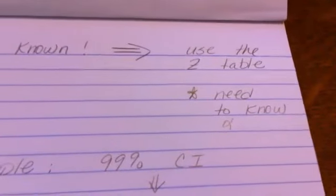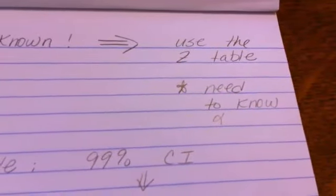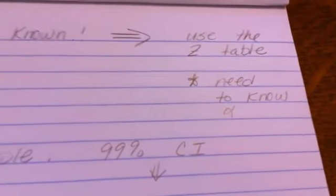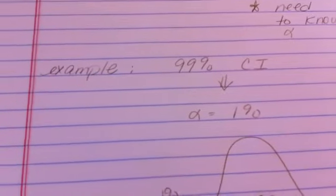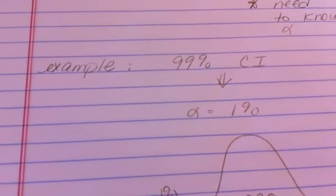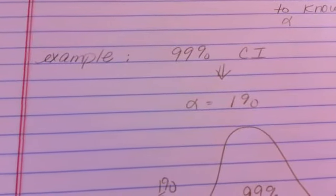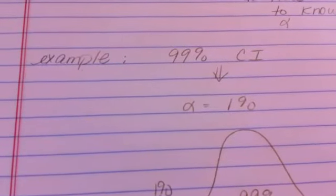So we need to know our confidence level, and then that will get us to our alpha. So as an example, if we were going to do a 99% confidence interval, that means our alpha being 1%, 0.01, so just 1 minus 0.99.